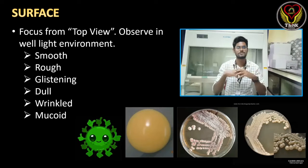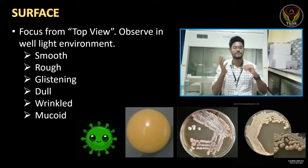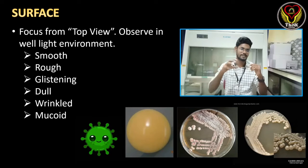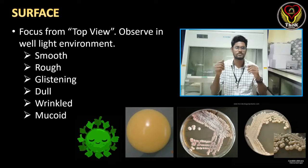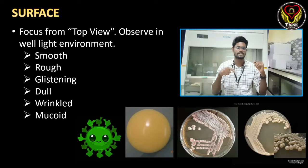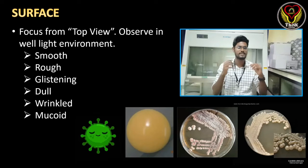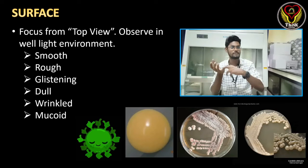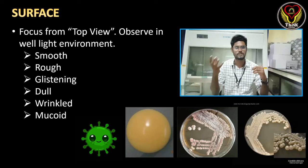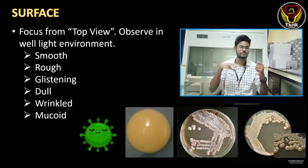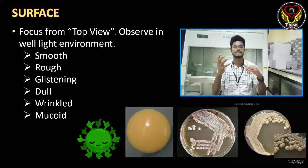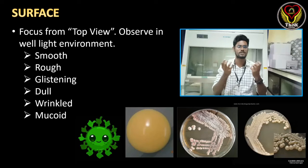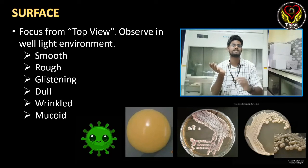The fifth character is surface — the top view of the colony. The categories are: first, smooth — the surface is uniform and smooth. Second, rough — the surface is powdery and rough. Third, glistening — the surface is shiny, which may indicate biofilm production by bacteria. Fourth, dull — the surface is not shiny. Fifth, wrinkled — the surface has wrinkles. Sixth, mucoid — it appears slimy.